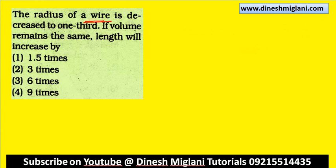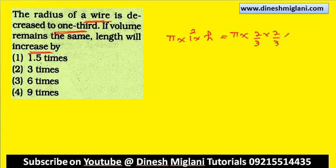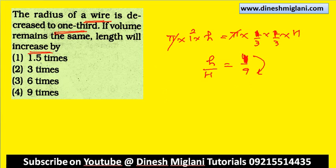The radius of a wire is decreased to one third and the volume remains the same. What happens to the length? Let original radius be 1 and height be h. New radius is 1/3. Pi into 1 squared into h = pi into (1/3) squared into new h. Solving: new h = 9h. So the length increases by 9 times. Fourth is my answer.